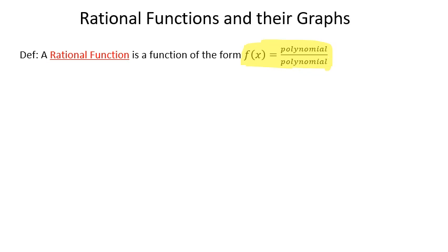One thing that all polynomials have in common is that their domain is all real numbers — not always true with a rational function. A rational function is a fraction, and anytime you have a fraction where x is on the bottom, you always have the risk of some numbers causing you to have a zero in the denominator. The denominator can't be zero, so if there are numbers that cause the denominator to be zero, we throw them out of the domain. The domain of a rational function in some cases will be all real numbers, but in many cases it won't be — it all depends on what polynomial is on the bottom of the fraction.